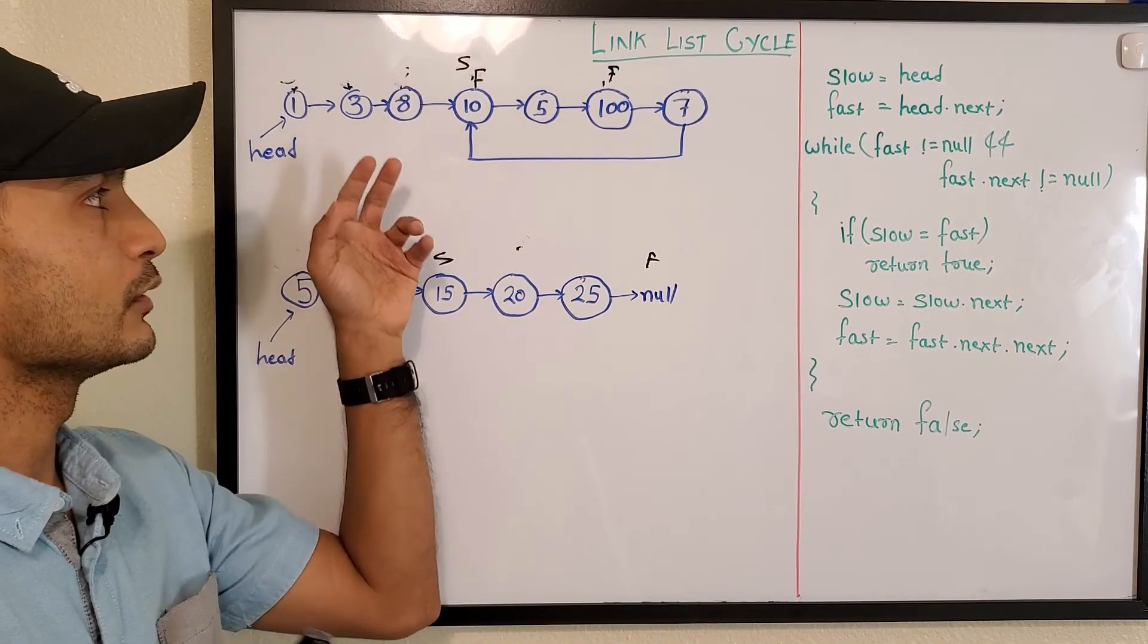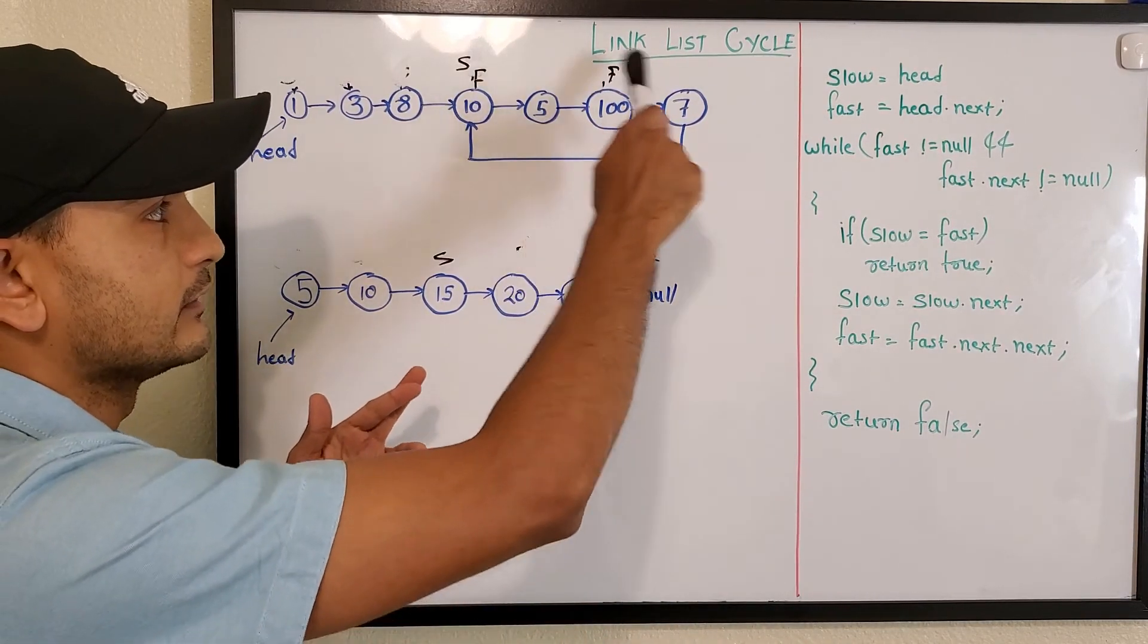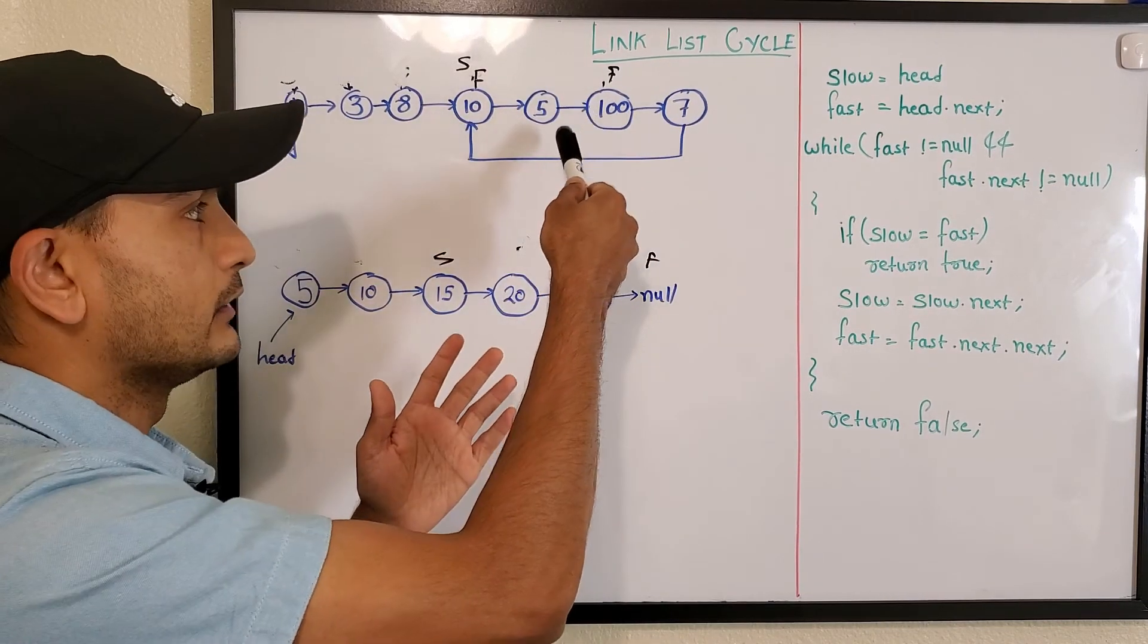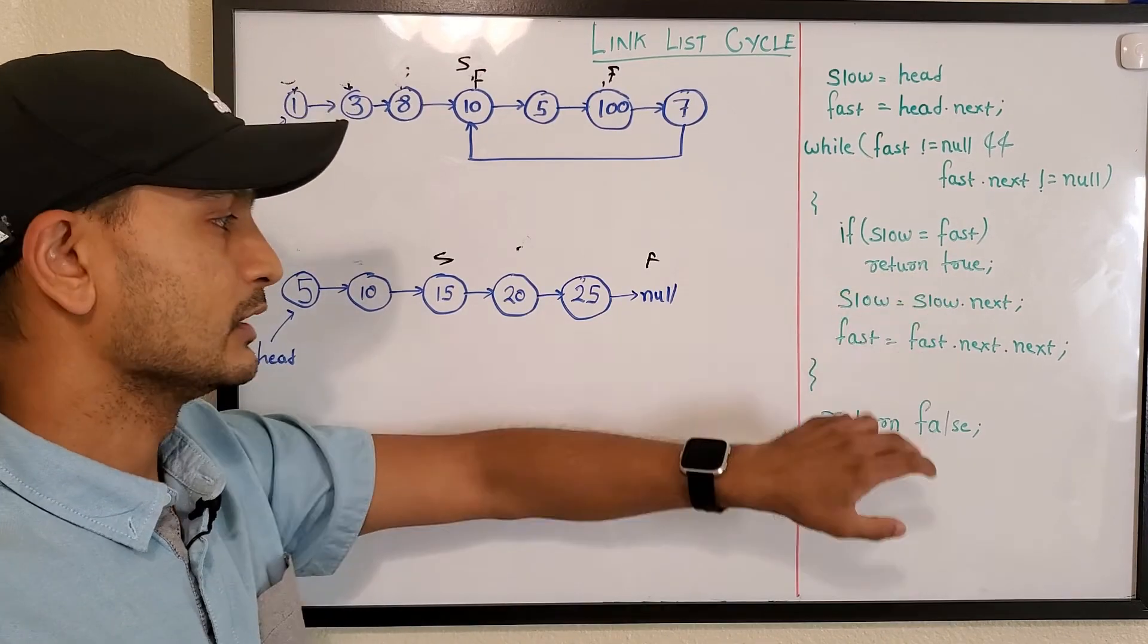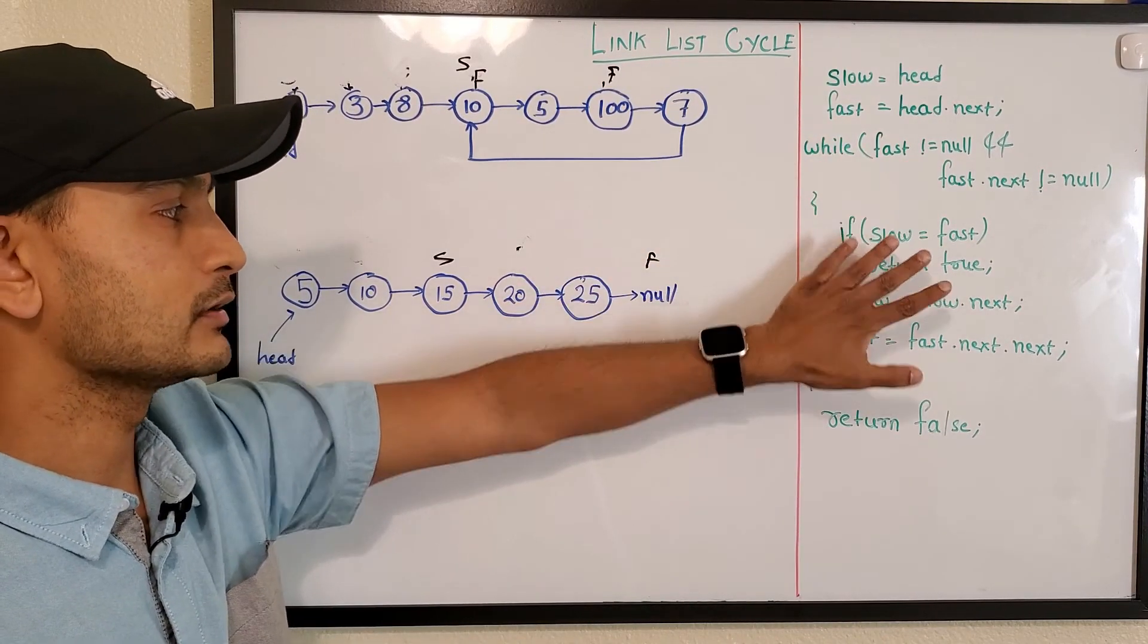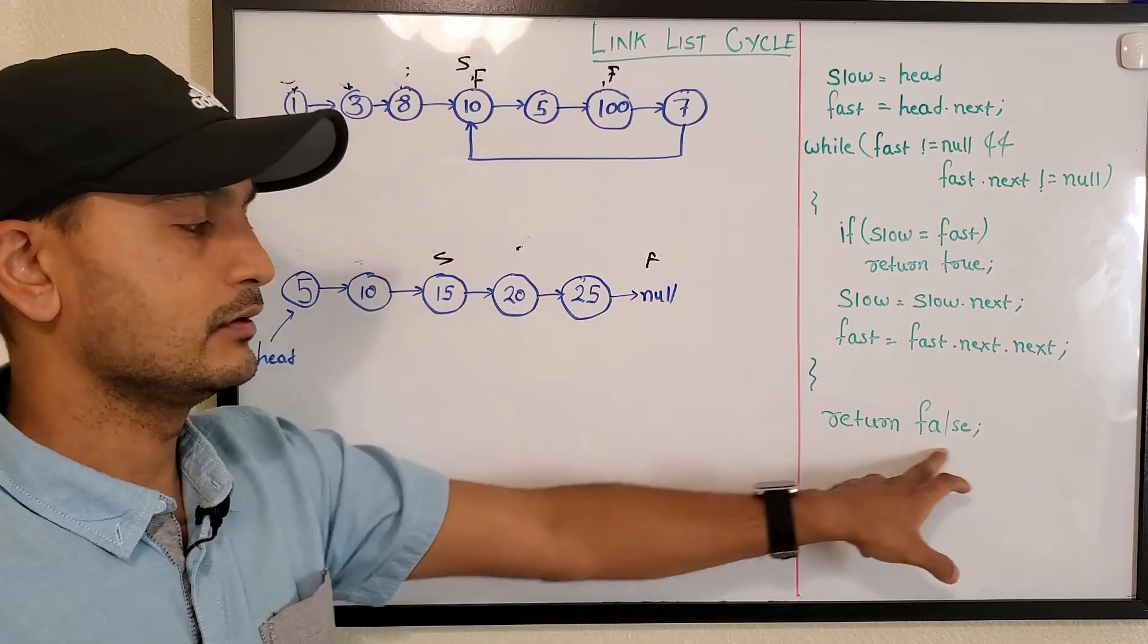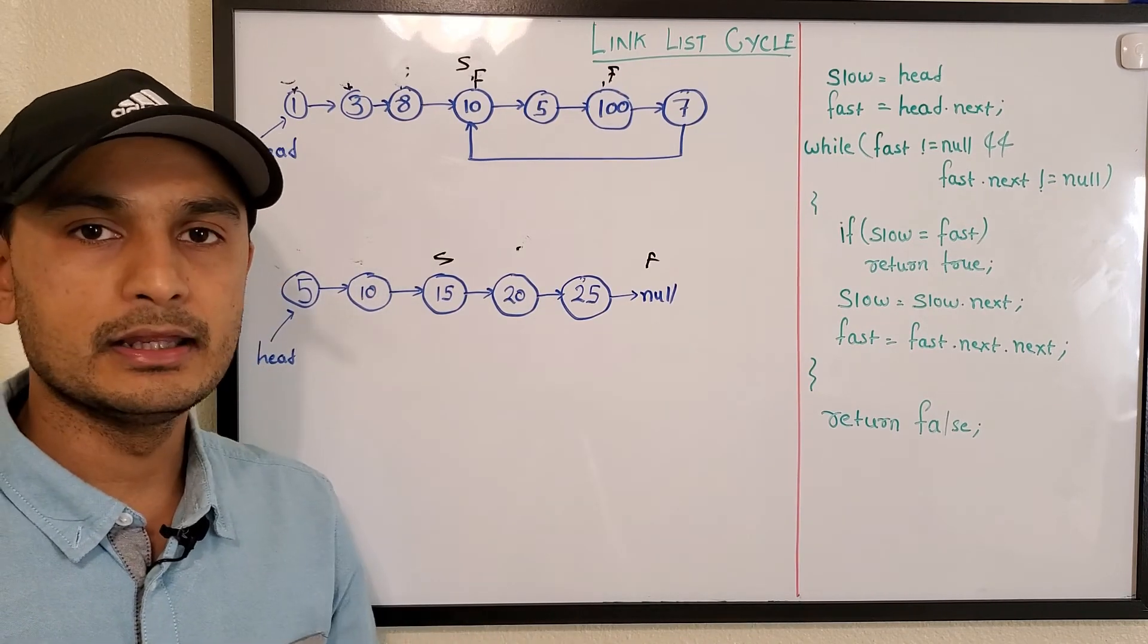That's the gist of the approach. We have two pointers, one moving slowly and one moving fast. If there is a cycle, eventually they'll meet at some point because it's a cycle. If they meet at one point, we return true. If they don't meet at any point, if fast is so fast that it reaches null, we return false. That's the approach. Let's head to the computer and run the code and confirm it.